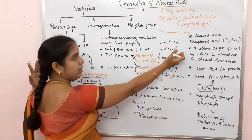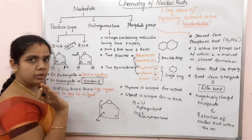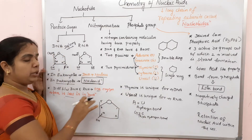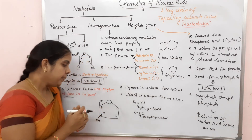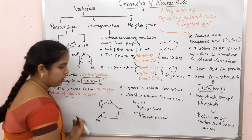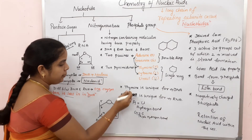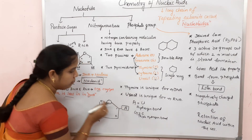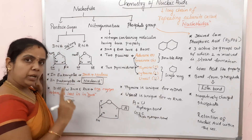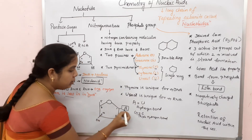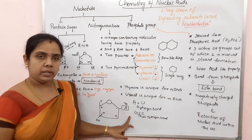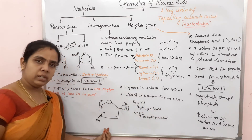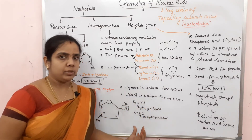In the chemical structure of a nucleotide, the nitrogenous base connects to the pentosugar at carbon number 1. For example, the purine Adenine connects via nitrogen to carbon 1 of the pentosugar. Similarly, pyrimidines also connect at carbon 1 of the pentosugar to form the nucleotide.